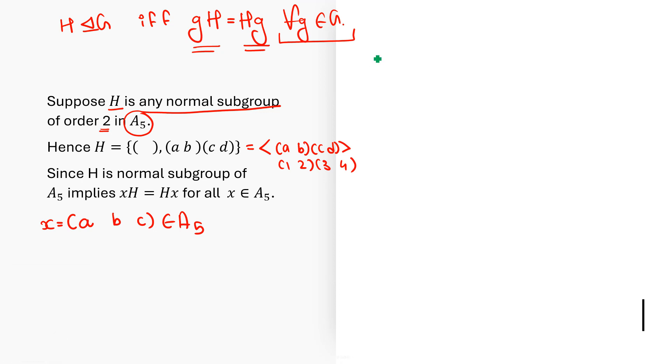XH is (ABC) times the identity, and (ABC) times (AB)(CD). If you multiply the identity, you get (ABC). For the second product, A goes to B, then B goes to C, so A goes to C. C goes to D and D stays D. D goes to C and C goes to A. B goes to itself. So XH is the set {(ABC), (ACD)(B)}.